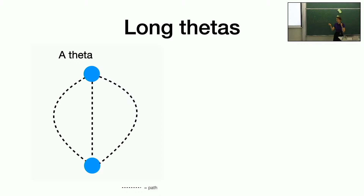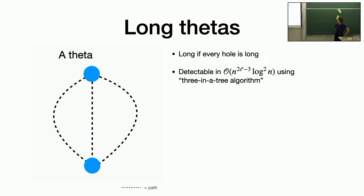A theta is a graph consisting of two vertices U and V and three internally disjoint and non-adjacent paths between them. It has to contain a long hole because two of the three paths have the same parity, and together they would be a long even hole. We call it a theta-long if every hole in the theta is long. They're detectable in polytime using the three-in-a-tree algorithm, a subroutine from Lai, Liu and Tharap.